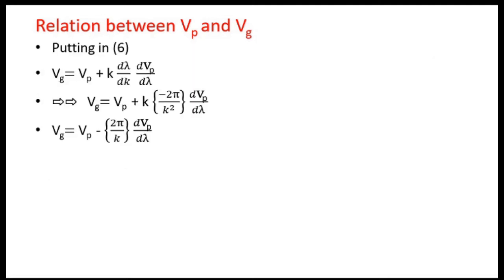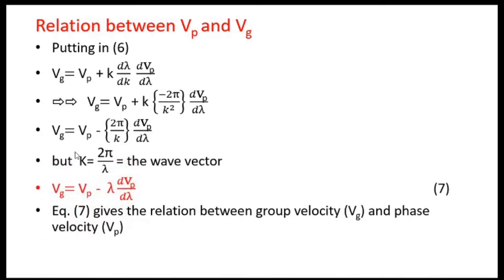Substituting dλ/dk = −2π/k² into equation 6, and using 2π/k = λ, we get the group velocity vg = vp − λ·(dvp/dλ). This is equation 7, which gives the relationship between phase velocity vp and group velocity vg.